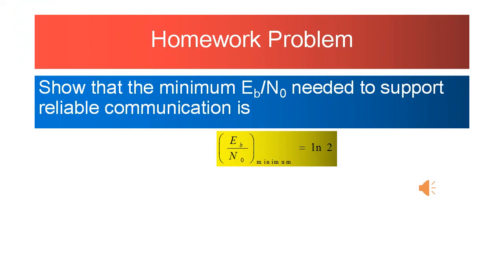Here I am giving you one homework problem. You have to show the minimum value of Eb/N0 is always ln2. Show that the minimum Eb/N0 needed to support reliable communication is always ln2. If you just go through this video, I hope you will understand and will be able to solve this.